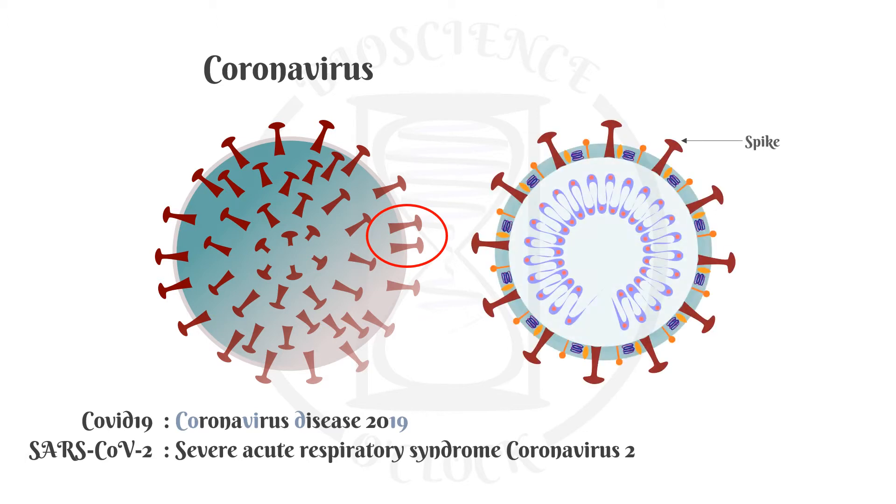It is in the spike protein where the receptor binding domain is located. The virus has a membrane protein M, an envelope protein E, a hemagglutinin esterous protein HE. Inside, we find a nucleocapsid, the N protein, and the virus genome as a positive sense single-stranded RNA.